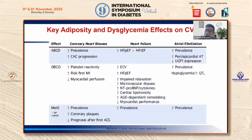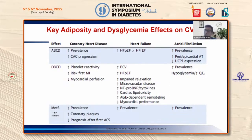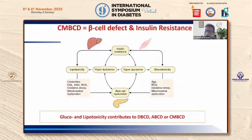ABCD increases the prevalence and progression of coronary artery calcification, preserved and reduced ejection fraction, and atrial fibrillation. DBCD leads to more reactive platelets, higher risk of first micro-infarction, decreased myocardial perfusion, and myocardial damage. The combined CMBCD model leads to more coronary plaques, higher prevalence of first acute coronary events, all coronary artery disease, heart failure, atrial fibrillation, and death — driven by beta cell defect, insulin resistance, lipotoxicity, and glucotoxicity.